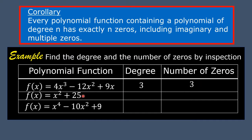The second polynomial function is f(x) = x² + 25. The exponent of x in the first term is 2, and 25 is understood to be 25x raised to the exponent of 0. Since 2 is larger than 0, the degree is 2 and the number of zeros is also 2.